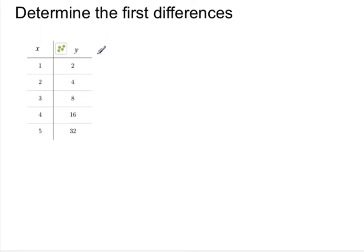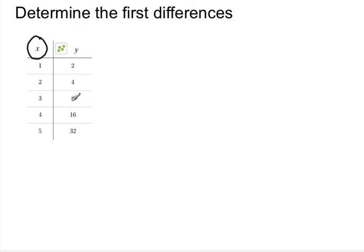First differences is a calculation on a table of values in a relation, so any relation we have in a table of values we can find the first differences. Notice what we want to do is make sure that the independent variable is lined up in order of increasing values, so we have 1, 2, 3, 4, 5, and so on.